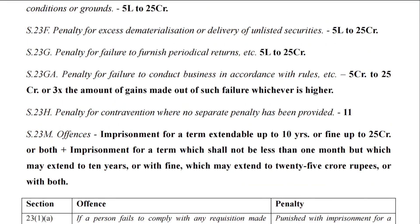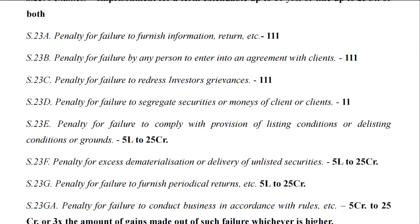Section 23H covers the penalty for contraventions where no separate penalty has been provided. It carries a penalty of not less than 1 lakh rupees, which may extend up to 1 crore rupees.